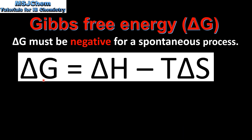In the previous video we used this equation to calculate the change in Gibbs free energy for a reaction. The change in Gibbs free energy must be negative for a spontaneous process. In this video we'll look at how changes in the enthalpy, the temperature and the entropy can affect the spontaneity of a process.